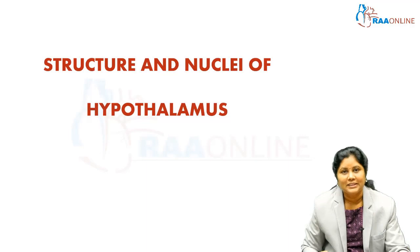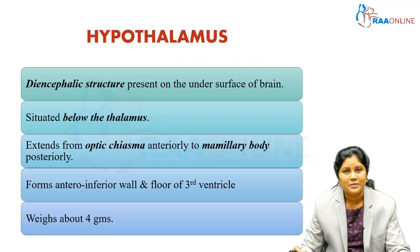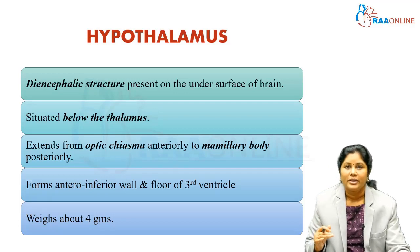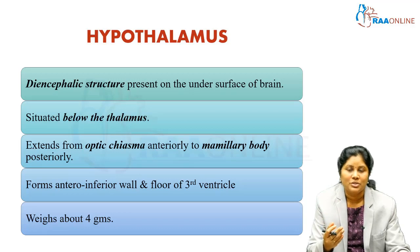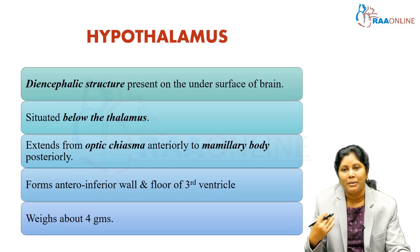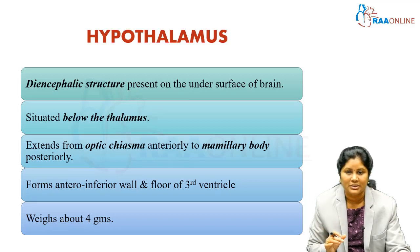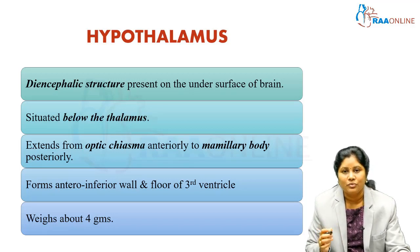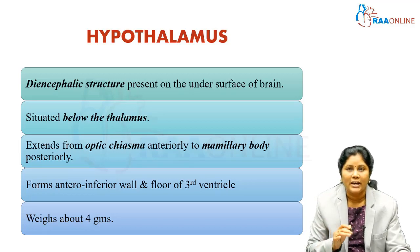Hypothalamus is a subcortical structure present in the diencephalon of the brain, just below the thalamus. In front of the hypothalamus you have the optic chiasm, and behind you have the mammillary body, which is the extension of the hypothalamus. This hypothalamus forms the floor of the third ventricle and also the antero-inferior wall of the third ventricle.